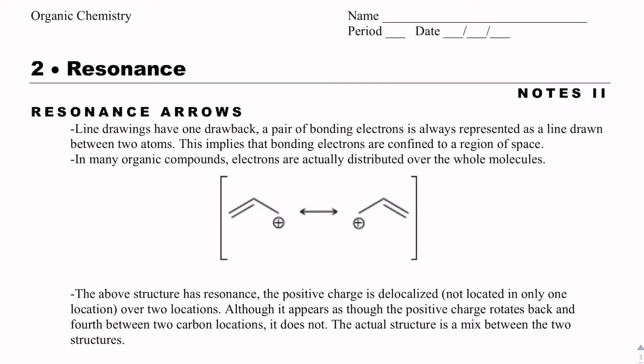Resonance is this idea that electrons can move — delocalized electrons specifically — can move around a molecule and exist in different locations. So we could have structure one here, and we could have structure two, and we're going to have a double-headed arrow between two resonance structures.